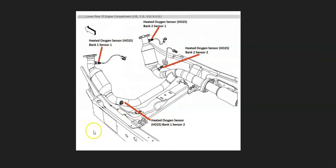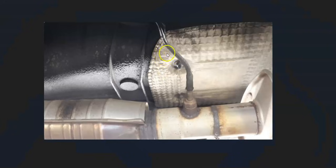If you can't get a diagram, bank one is always the side of the engine with the number one cylinder. Find the number one cylinder and that'll be the side having the problem. The first oxygen sensor down on the exhaust from there is sensor one, the upstream oxygen sensor.